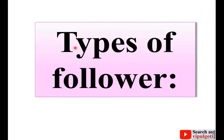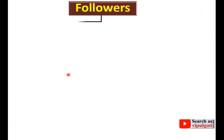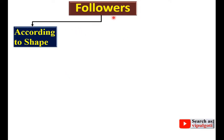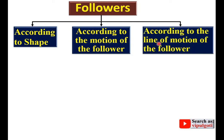Now, types of Follower. The classification of the Follower can be done in three ways: first, according to shape; second, according to the motion of the Follower; and third, according to the line of motion of the Follower.